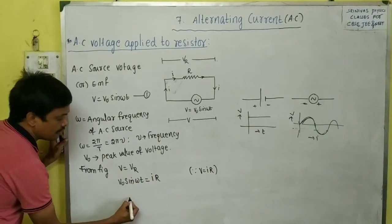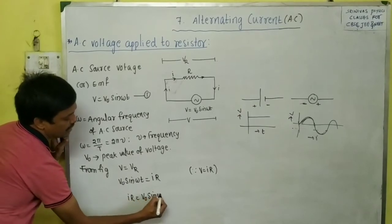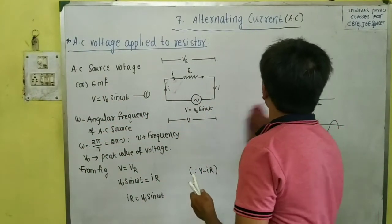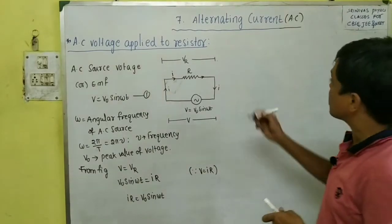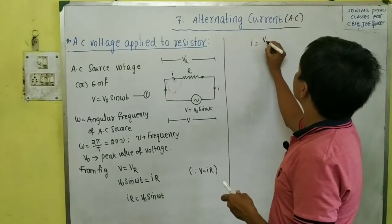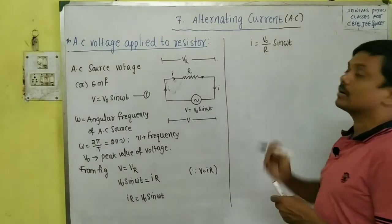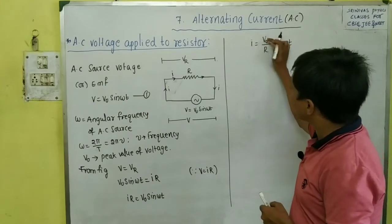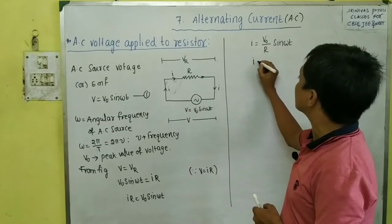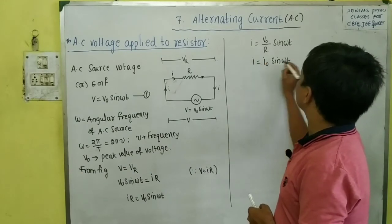We want the current formula. From Ohm's law, IR = V₀ sin ωt. Therefore, the current I = (V₀/R) sin ωt, which gives us I = I₀ sin ωt. This is an important equation.